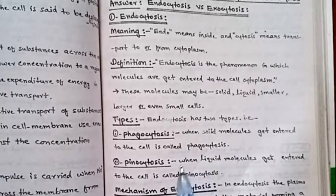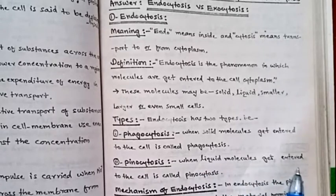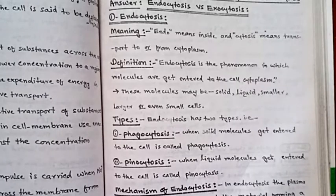When solid material comes into the cell, it will be phagocytosis, whereas when you have liquid molecules entering the cell, it will be pinocytosis.